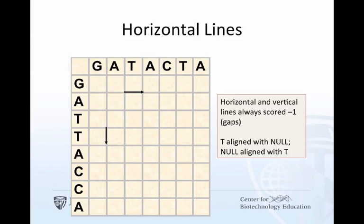To think of it another way, horizontal or vertical lines allow you to skip a letter in one of the sequences. Again, maybe not so intuitive. It might make more sense when you see the final result.